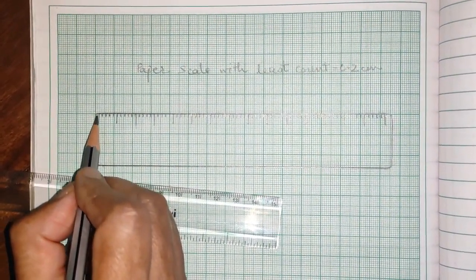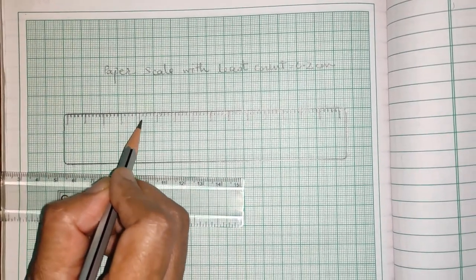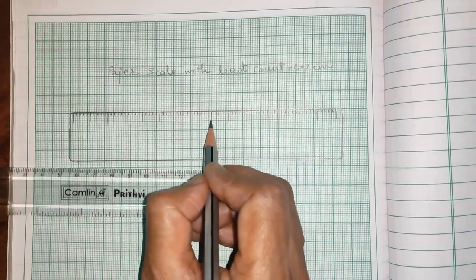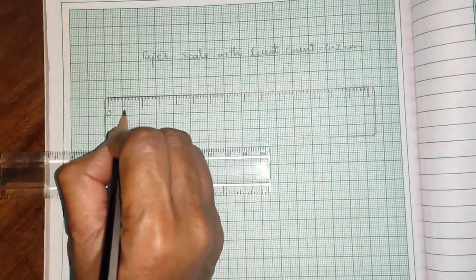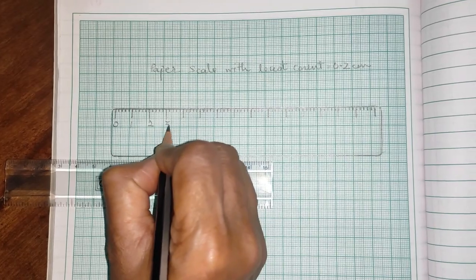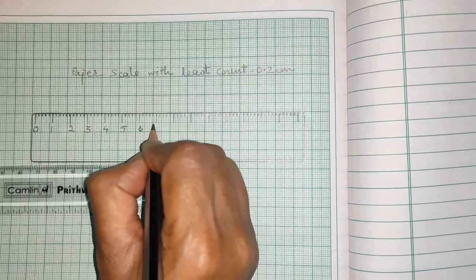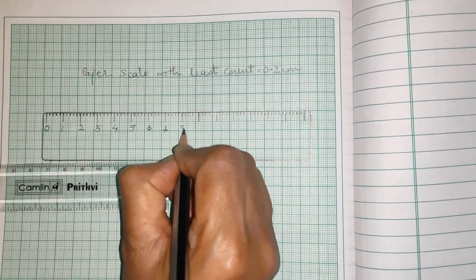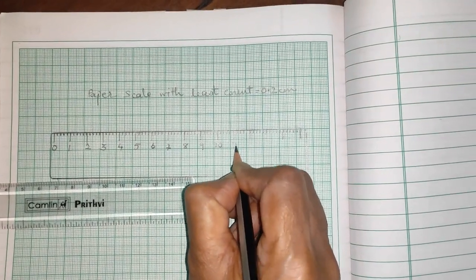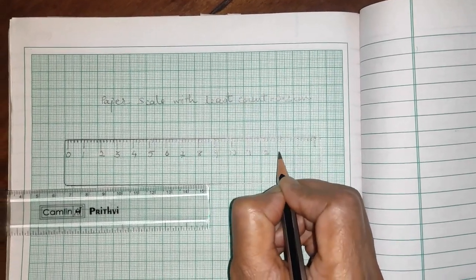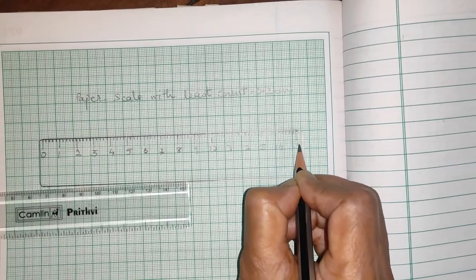And extended the lines for 0, 1 cm, 2 cm, 3 cm, 4, 5 up to 15. This 1 cm lines I have extended. So, I will write here, this is 0, this is 1, this is 2, this is 3, this is 4, this is 5, 6, then 7, 8, 9, 10, 11, okay? Then, 12, then 13, then 14, and then 15, okay?